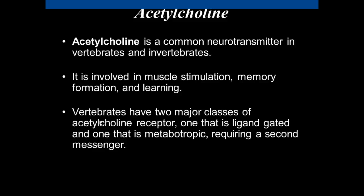Acetylcholine is a very common neurotransmitter in vertebrates and invertebrates. Remember, vertebrates have a backbone and invertebrates do not. It is involved in muscle stimulation, memory formation, and learning. Invertebrates have two major classes of acetylcholine receptors: one that is ligand-gated, and the other is metabotropic, requiring a second messenger. Neurotransmitters are important in cell-to-cell communication — the presynaptic cell communicates with the postsynaptic cell through the release and actions of neurotransmitters. Notably, acetylcholine stimulates the contraction of skeletal muscles but acts as an inhibitor to cardiac muscle cell contraction, meaning it inhibits the contraction of your heart.